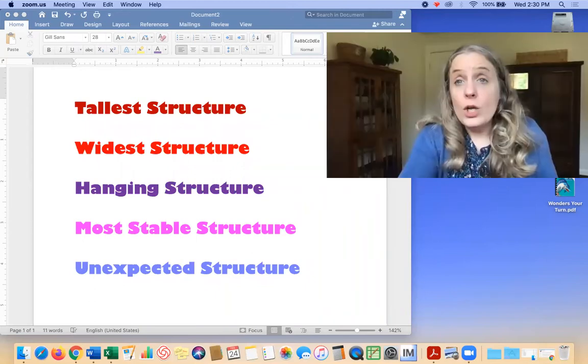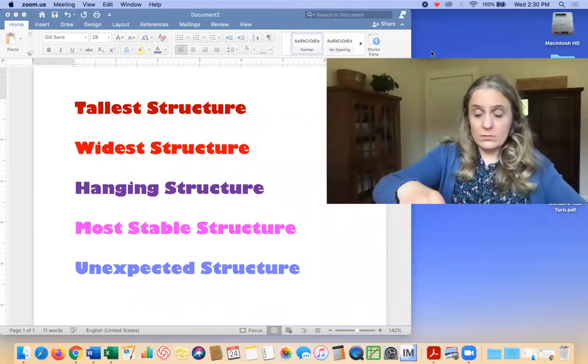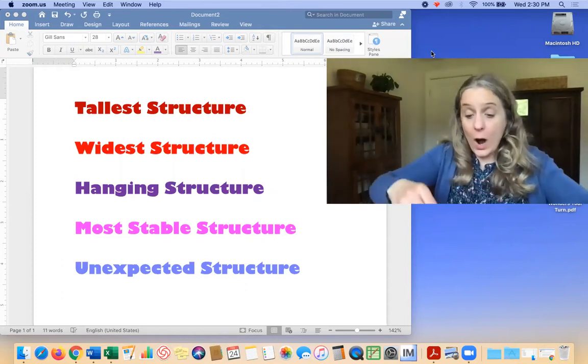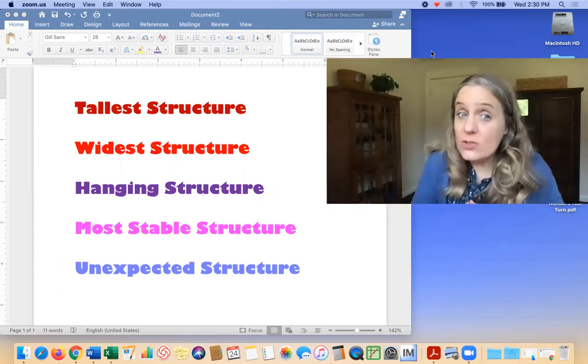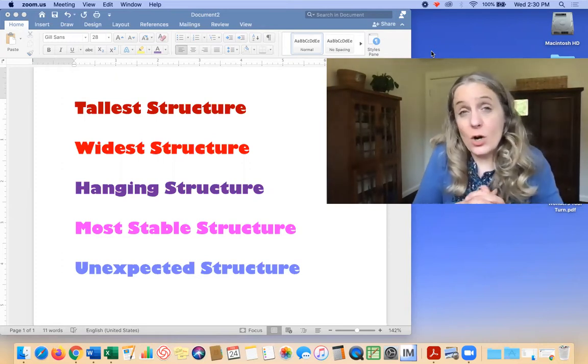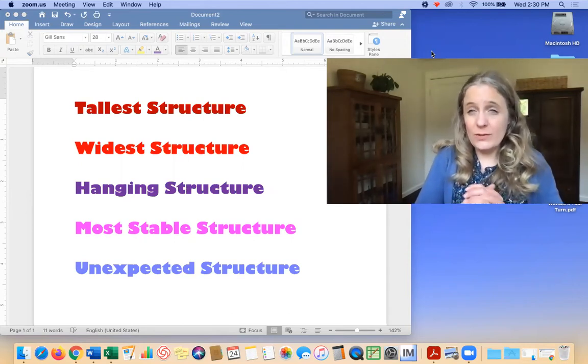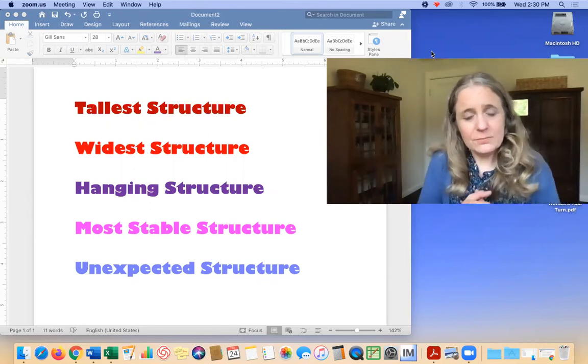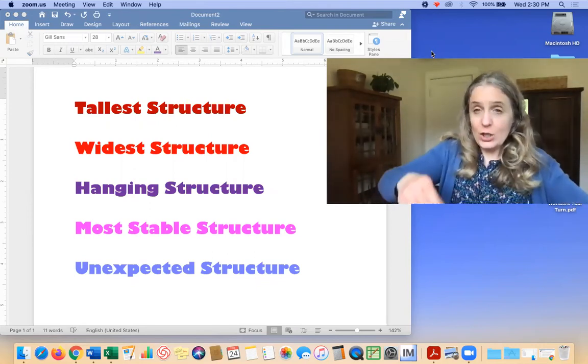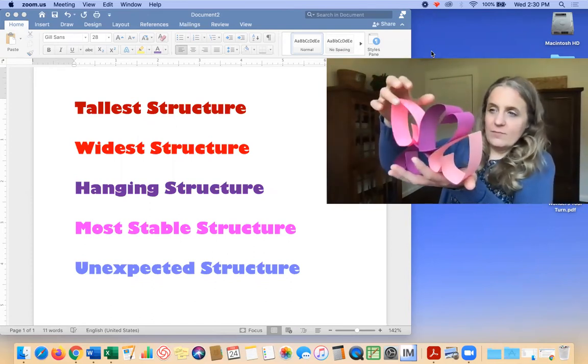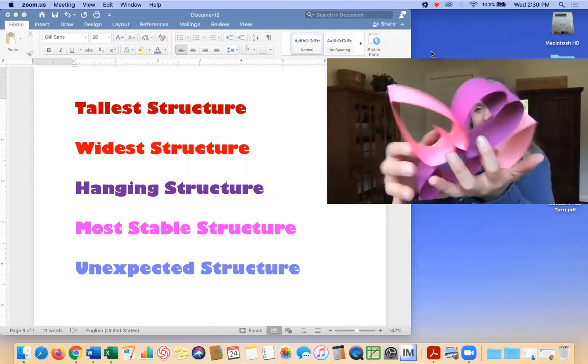So your job is to use heart shapes for one of those challenges. And you can pick the one that excites you the most. So let me show you again what that looks like. So you can go for the tallest structure. You can see how tall you can go, how wide you can go. You can make a hanging structure, in which case, remember, you can add some yarn or string if you want to. Your most stable structure. Your most stable structure, which is what I was going for at first to have a really nice solid base. Or an unexpected structure. Could you see how you could turn this into a horse? I don't know.